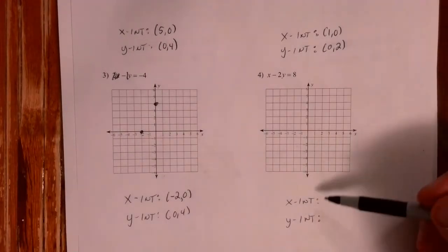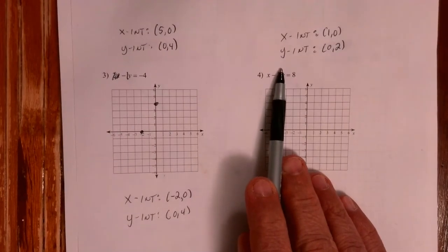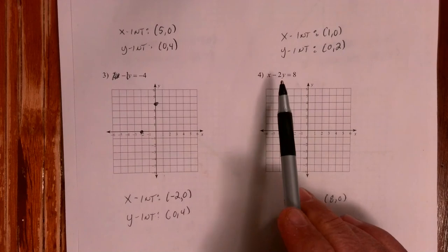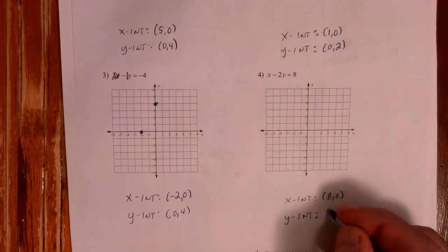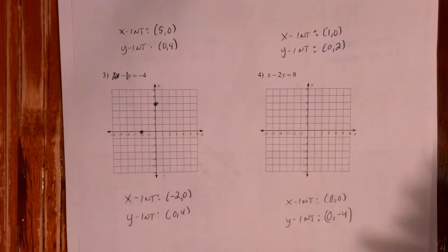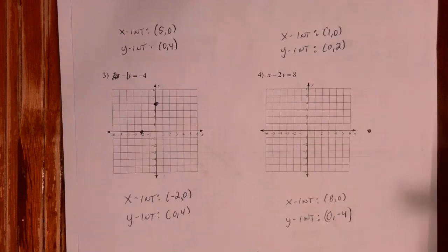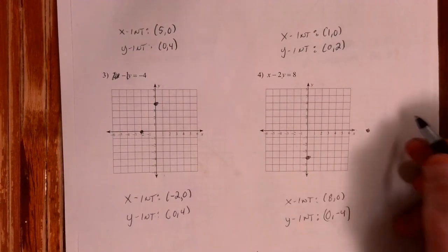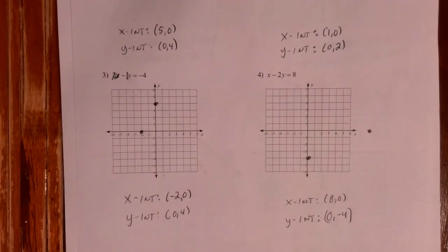Last one. X-intercept when y equals zero — if y equals zero, that goes away, and my x-intercept is 8, 0. The y-intercept is when x equals zero — that's gone, leaving negative 2y equals 8. Divide both sides by negative 2 and y equals negative 4. So my y-intercept is 0, negative 4. I've got my two points, and we could graph it with a ruler. That's how we find intercepts — that's what you'll be doing in class your first day this week.